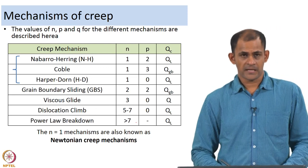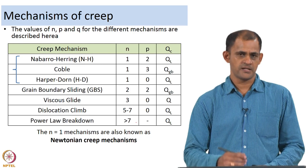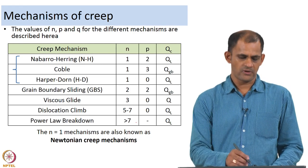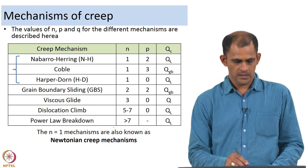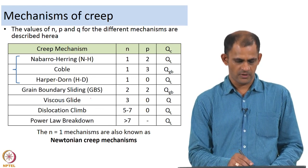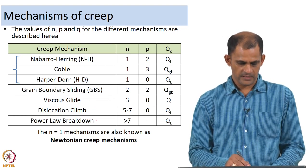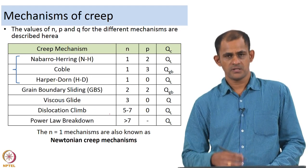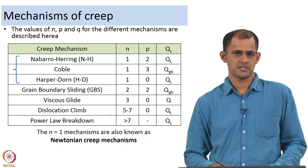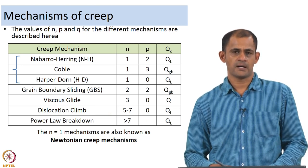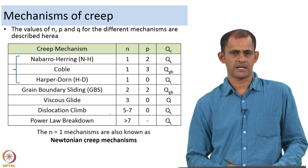The mechanisms of creep identified so far are: Nabarro-Herring creep, Coble creep, Harper-Dawn creep, grain boundary sliding, viscous glide, dislocation climb-controlled creep, and power law breakdown. These are broadly the different ways in which creep deformation is controlled — the different rate-controlling mechanisms of deformation.